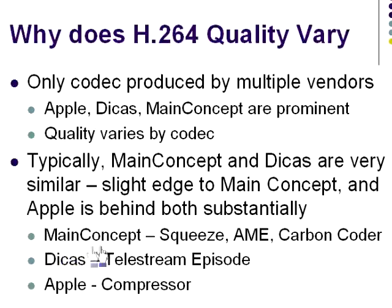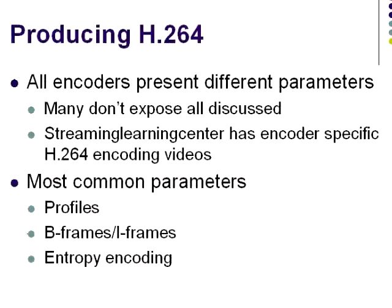Where can you find these codecs? MainConcept has the lion's share of the encoding tools, including Sorenson Squeeze, Adobe Media Encoder, and Rosette Carbon Encoder. DECUS is found primarily in Telestream products, while Apple is now only used in Compressor. One caveat: if you're producing H.264 video files, you'll see a completely different presentation of the encoding options in each encoding tool, and many don't expose all the options I discuss. This is a general explanatory video — if you're looking for encoder-specific direction, check out other videos on the Streaming Learning Center site.